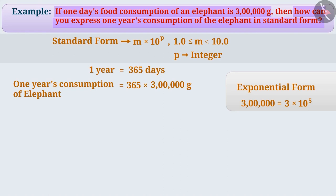In this way, one year's consumption of the elephant is equal to 365 into 3 into 10 to the power of 5 grams, which is equal to 1095 into 10 to the power of 5 grams.